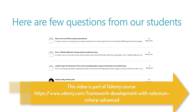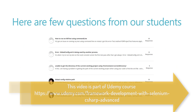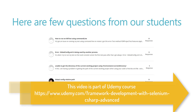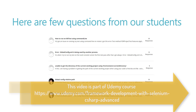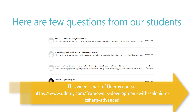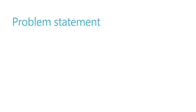Here are a few questions from our students of the executeautomation channel as well as on Udemy, saying they are facing some problems with the globalconfig.xml file while using it in different environments. And what is the problem statement actually?